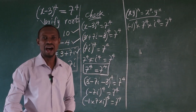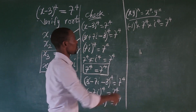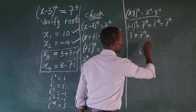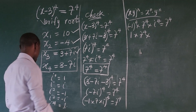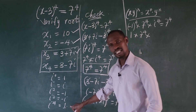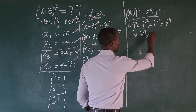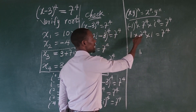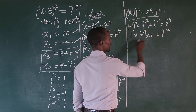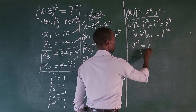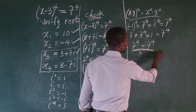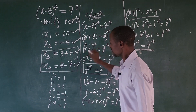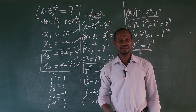What is (-1)^4? That is positive 1. And we already know i^4 = 1. So we have 1 × 7^4 × 1 = 7^4, which equals 7^4. This shows that the fourth root, the imaginary root x = 3 - 7i, also satisfies the original equation.